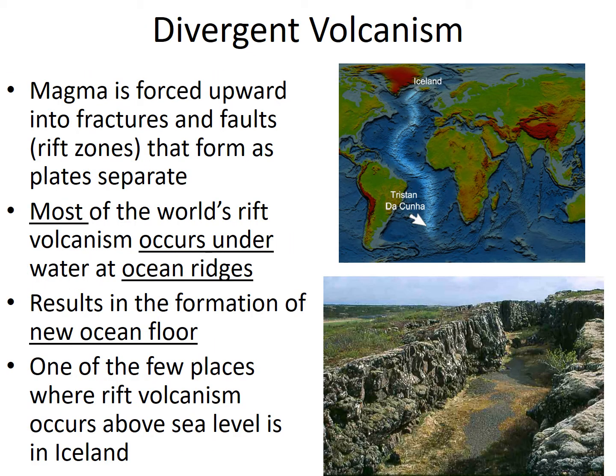Divergent volcanism occurs in fractures, faults, or rift zones where the plates separate. Most of this occurs underwater in ocean ridges, resulting in the formation of new ocean floors. The one place we can see this above sea level is in Iceland, because Iceland exists along a divergent boundary. This image shows that divergent rift valley in Iceland.